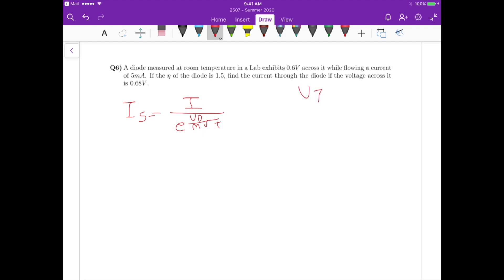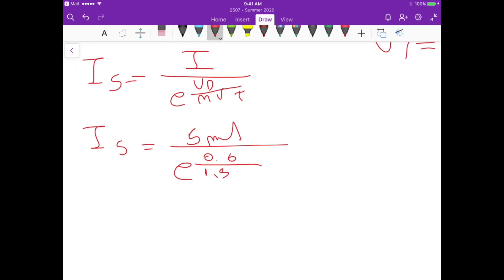For the thermal voltage we are going to use at room temperature it goes to 25 millivolts. So if we substitute the values in this equation here we have 5 milliampere exponential of 0.6 divided by the ideality factor 1.5 times those 25 millivolts. This gives us a saturation current that's 562.6 picoamperes.